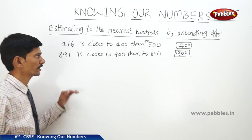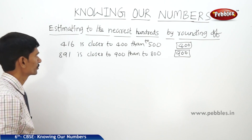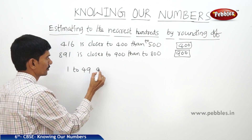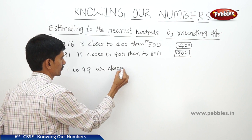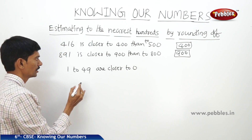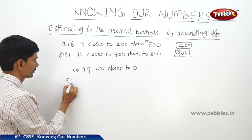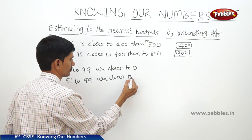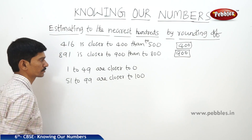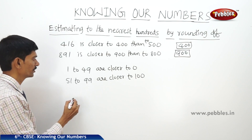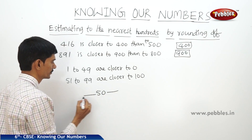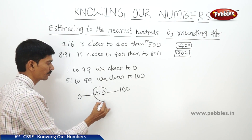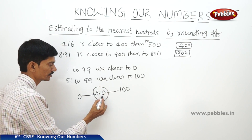When you correct a number to the nearest hundreds, the numbers from 1 to 49 are closer to 0, so they are rounded off to 0. The numbers from 51 to 99 are closer to 100, so they are rounded off to 100. The number 50 is exactly equidistant from 0 and 100.